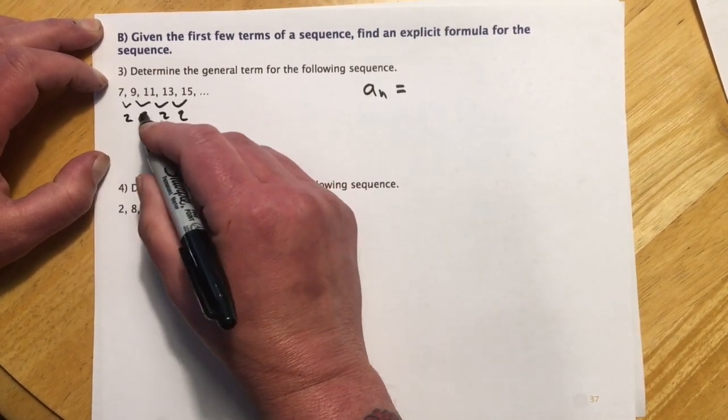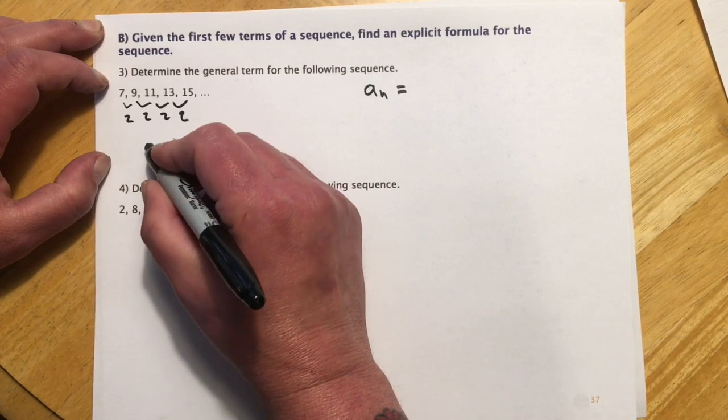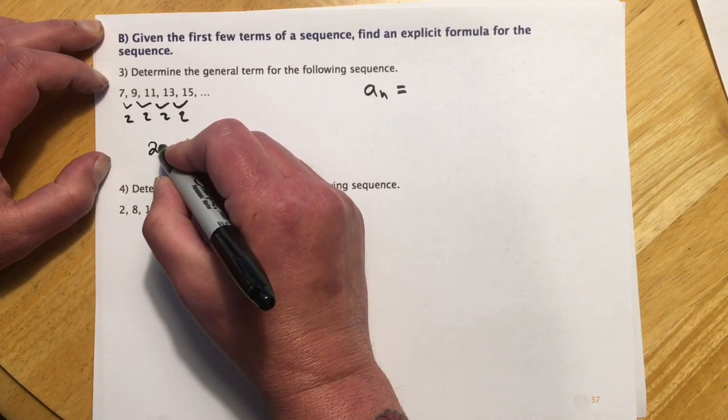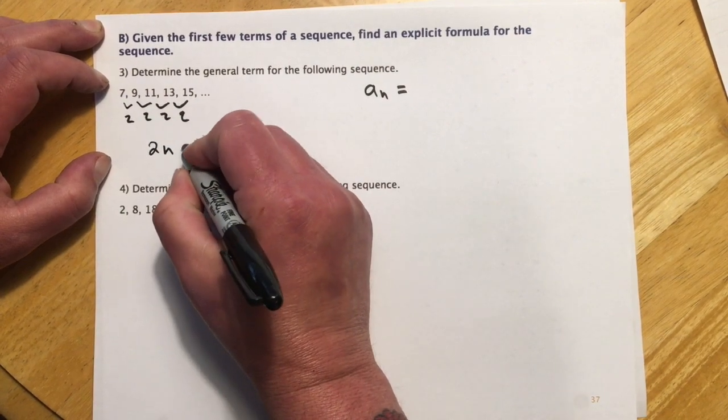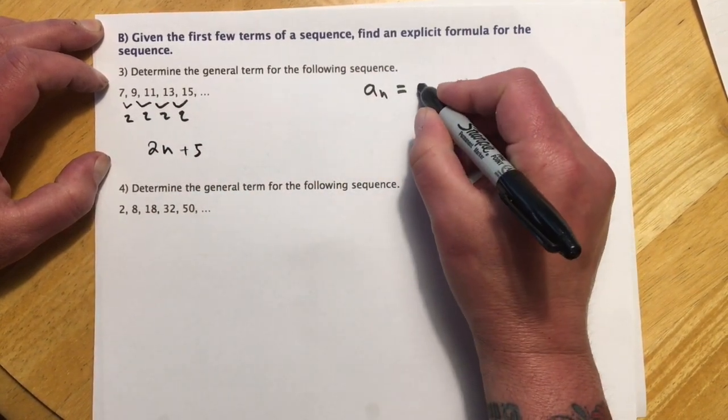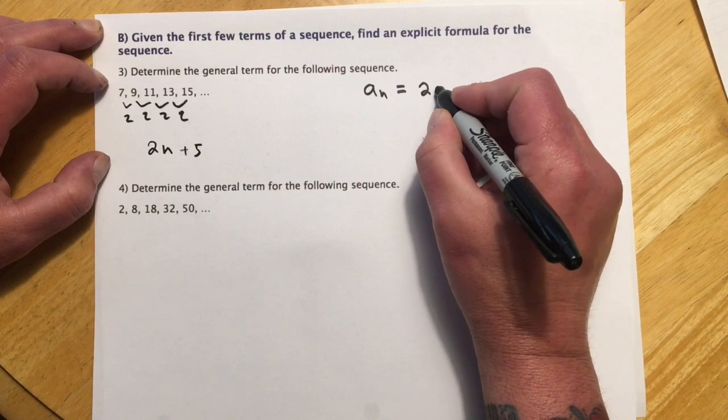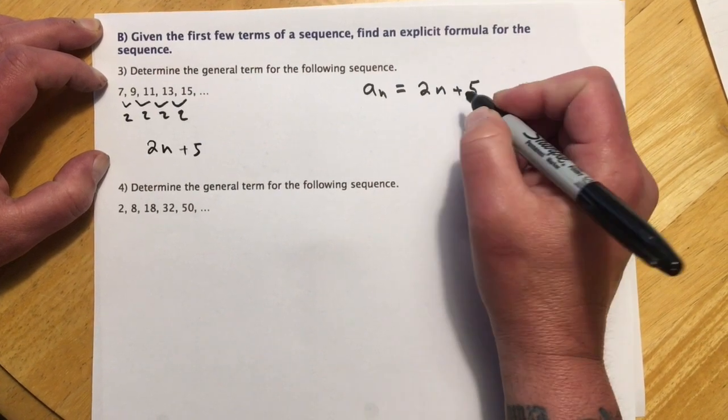So it would be, the counter is 2, so that's like our slope. So 2n, and then I need it when I plug in a 1 to come out to 7. So that would be a plus 5. So our general form is 2n plus 5.